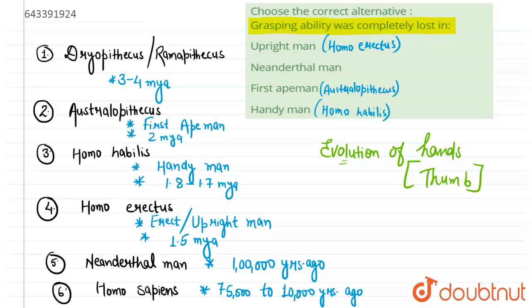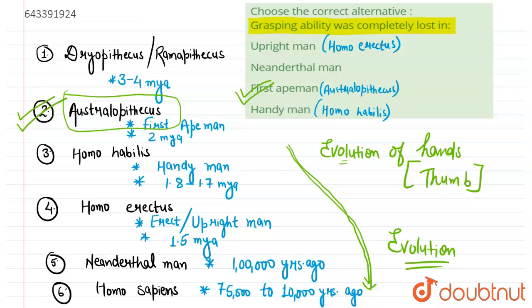So on basis of evolution of different body parts from here, we can directly identify that Neanderthal men, first ape men, upright men, and handymen, out of these the most primitive are which one? The first ape men. So first ape men are the most primitive one, and hence after that the body parts got developed and the modern human beings were developed. So this is the total idea of evolution, and in this course of evolution various body parts got developed. So Australopithecus are the most primitive one out of the given options. So the answer for this question would be: the grasping ability was completely lost in first ape men.